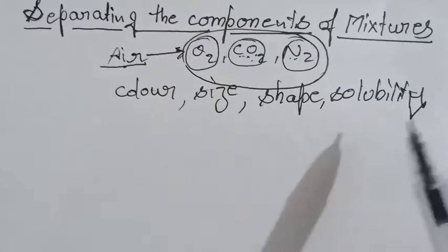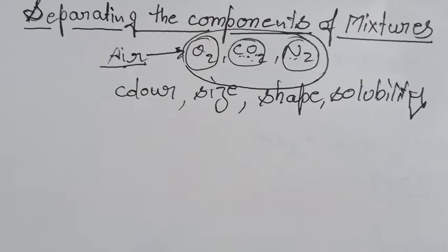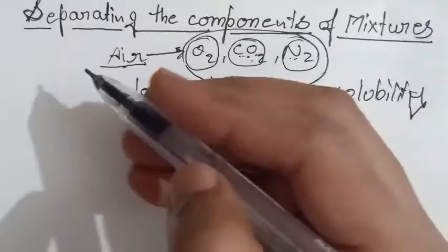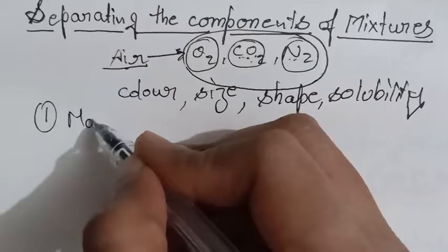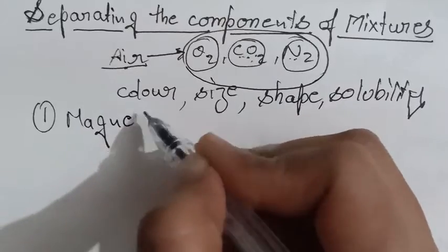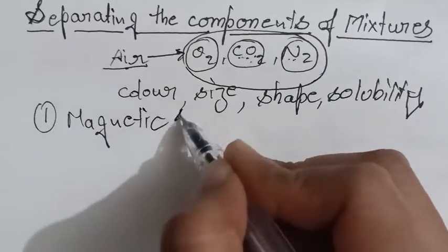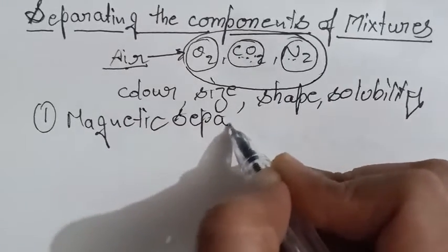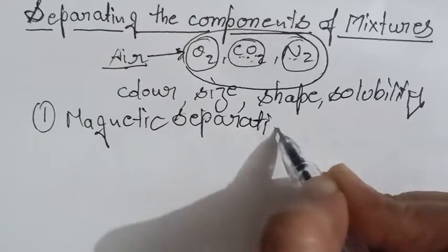So this is in your book. Next thing is the methods for separation, and the first method is magnetic separation.